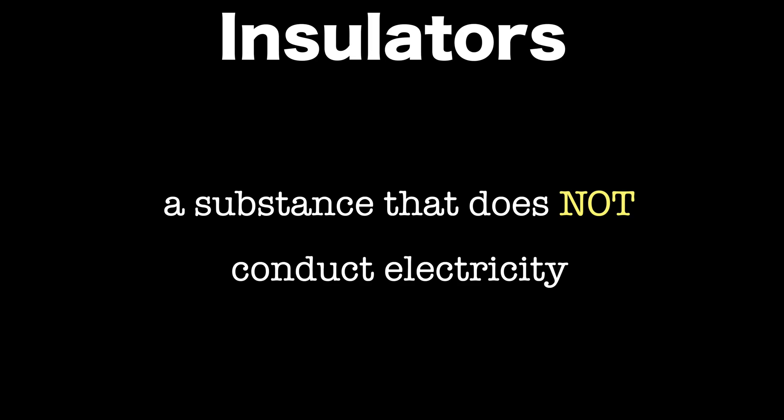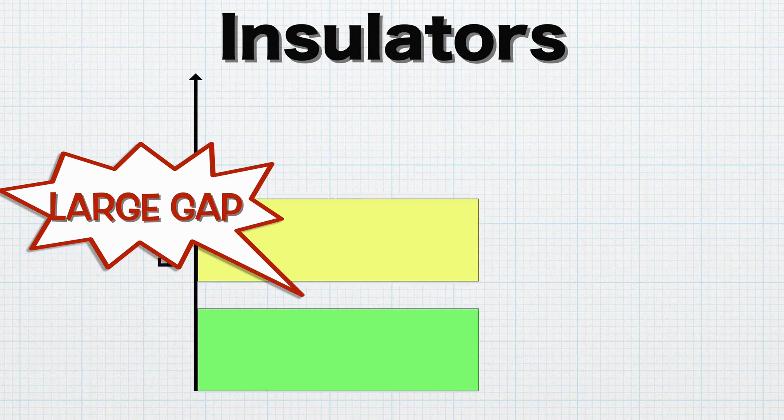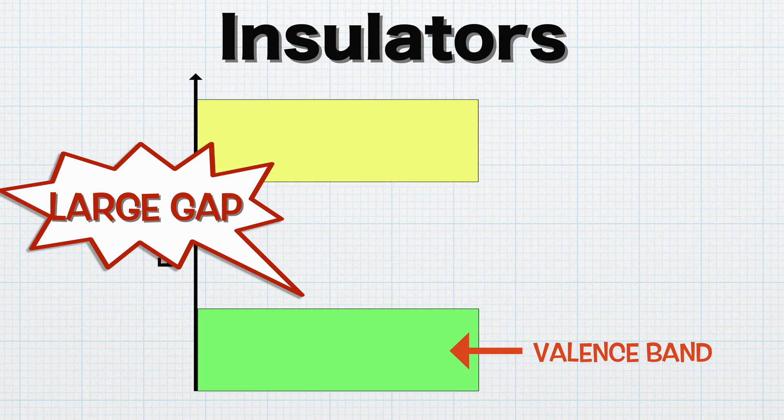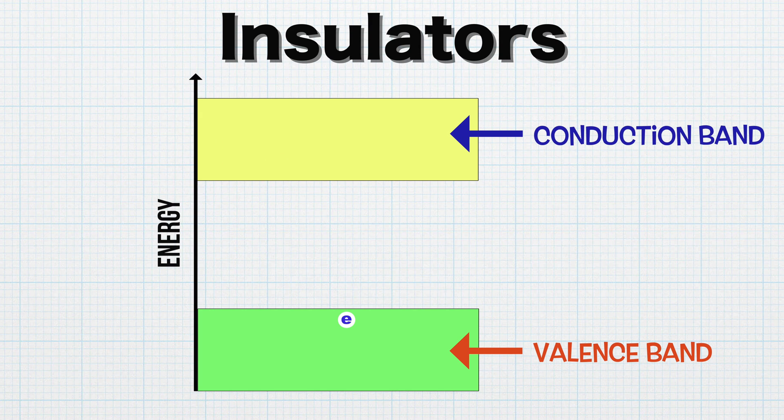An insulator, on the other hand, is a substance that does not conduct electricity. Unlike conductors, insulators have a large gap between the valence band and the conduction band. Valence electrons cannot reach the conduction band, therefore, no electricity flows.